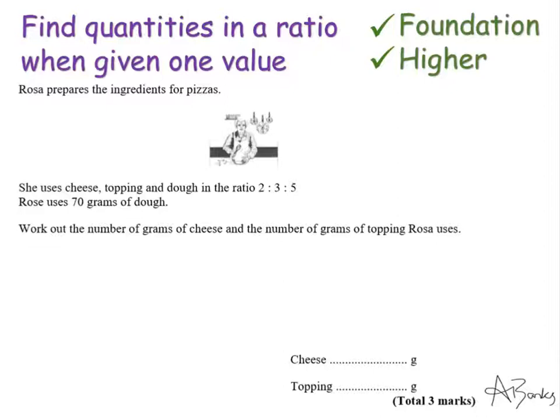The most common mistake I see here is that students don't read the question fully. They're so tempted when they see a ratio question just to do the method of adding these numbers in the ratio together.